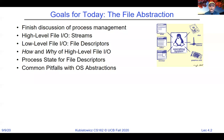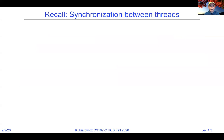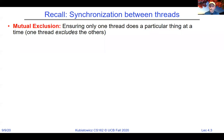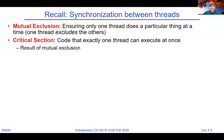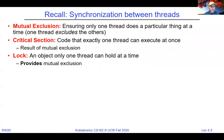From last time, we talked about threads and processes, and introduced this notion of synchronization. One idea was mutual exclusion, ensuring that only one thread does a particular thing at a particular time — one thread excludes the others. That piece of code being protected is called the critical section. If you have more than one thread in there, you're probably going to get some bad behavior. The way we did that was with locks: only one thread can hold a lock at a time, giving you mutual exclusion.